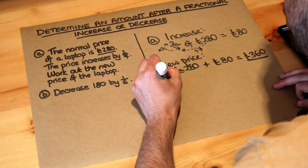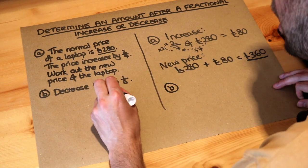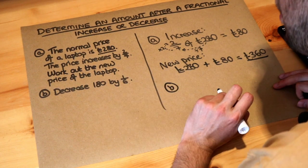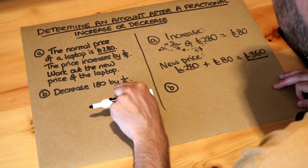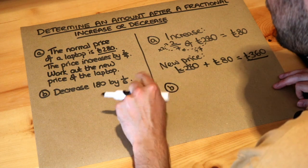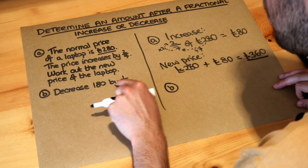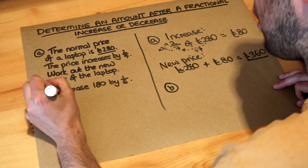What about the second question? We want to decrease 180 by a sixth of its value. That doesn't mean 180 minus a sixth. What it means, what it implies is that you want to reduce 180 by a sixth of its value.